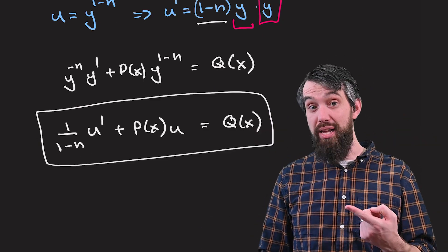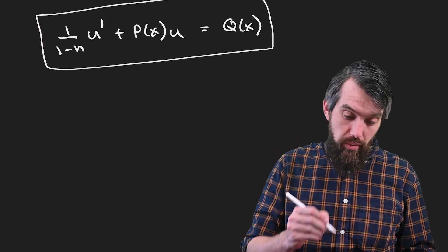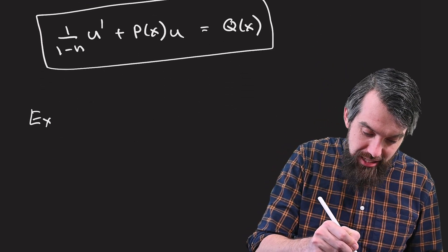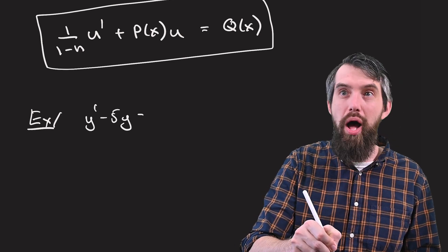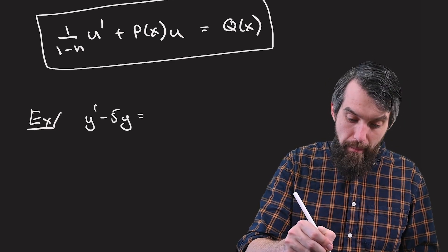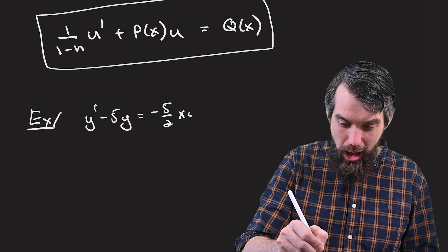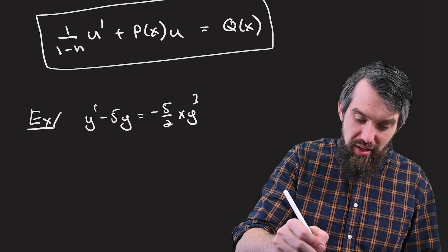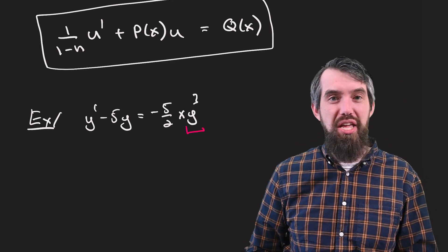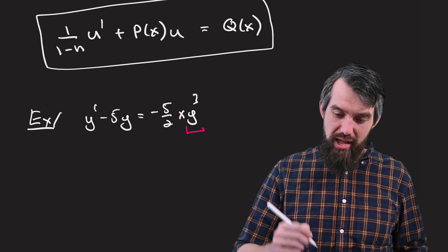Okay. So let's see how this works out in a concrete example. So I'm going to come and do, as an example, the following. y prime minus 5 times y is equal to minus 5 halves x y cubed. That's my messy expression.